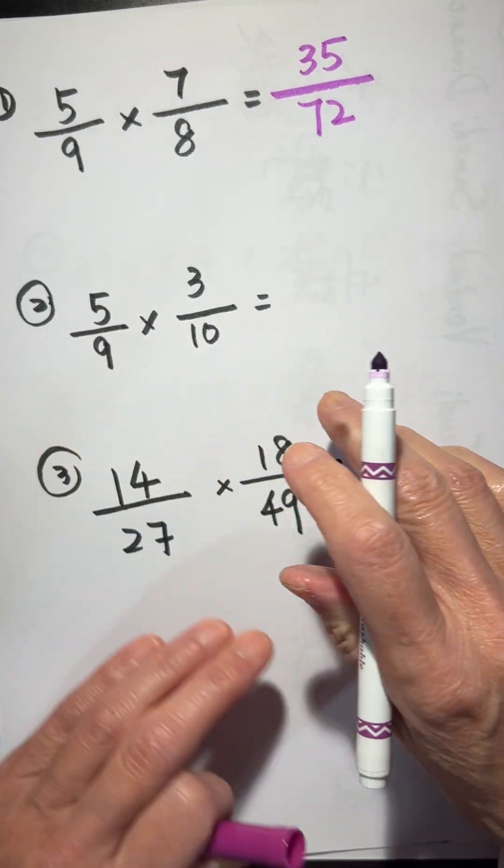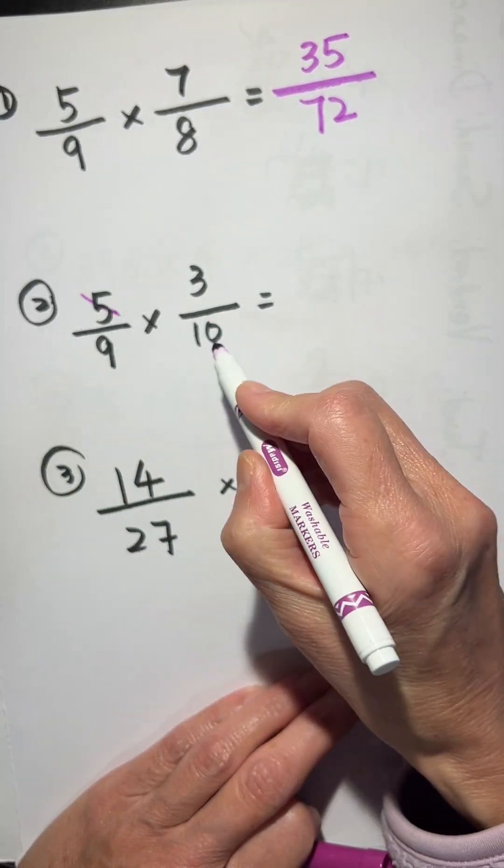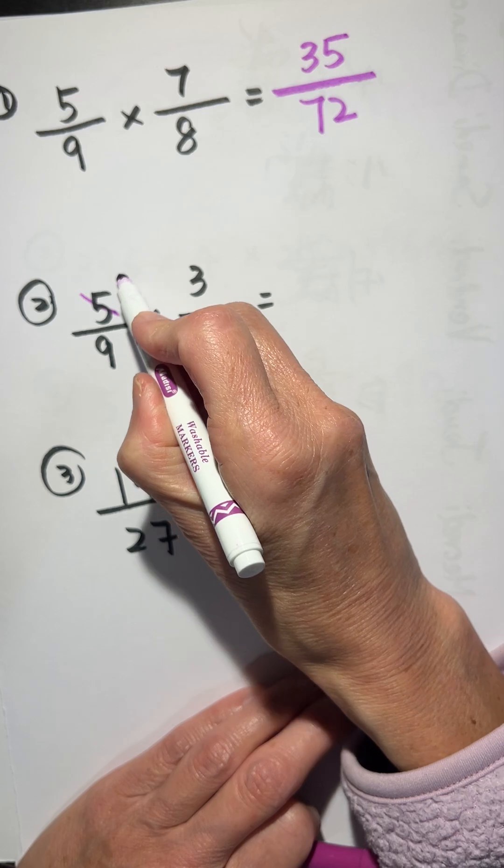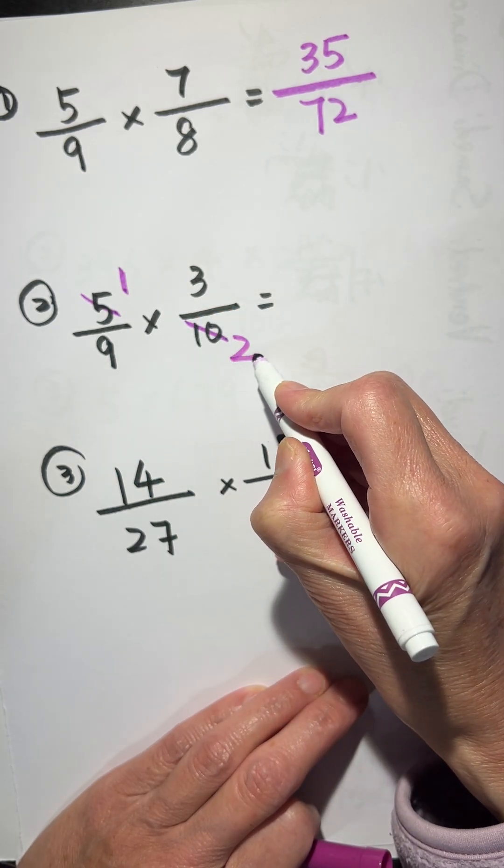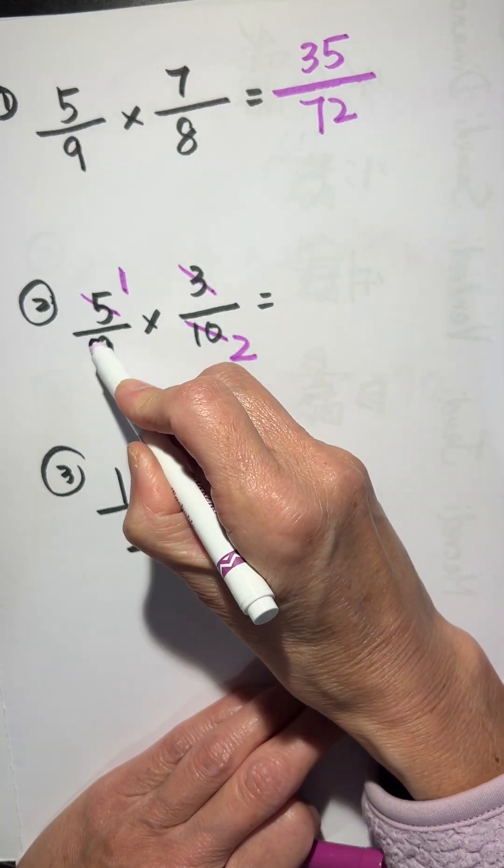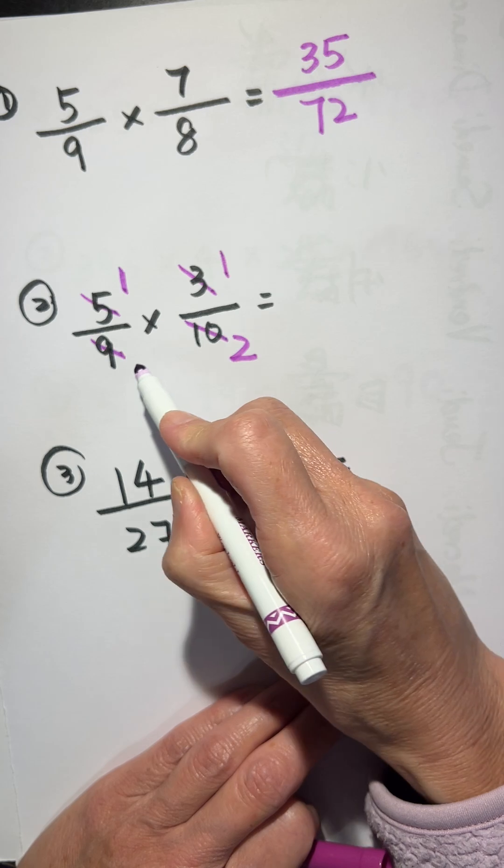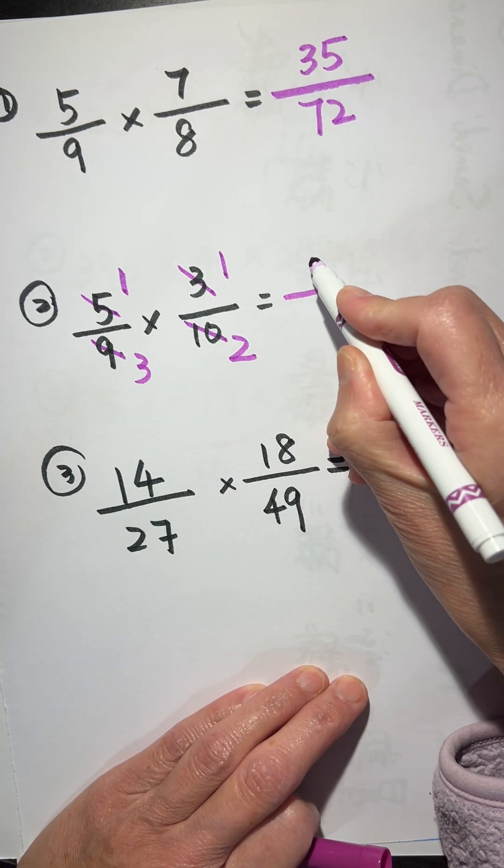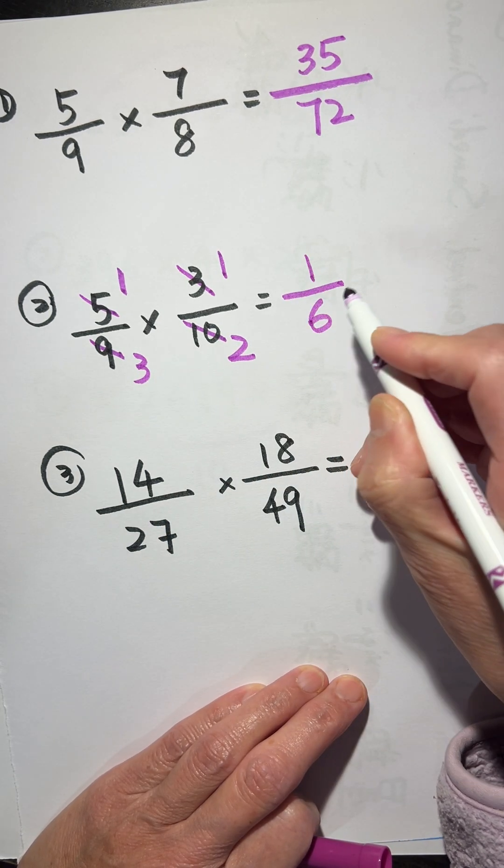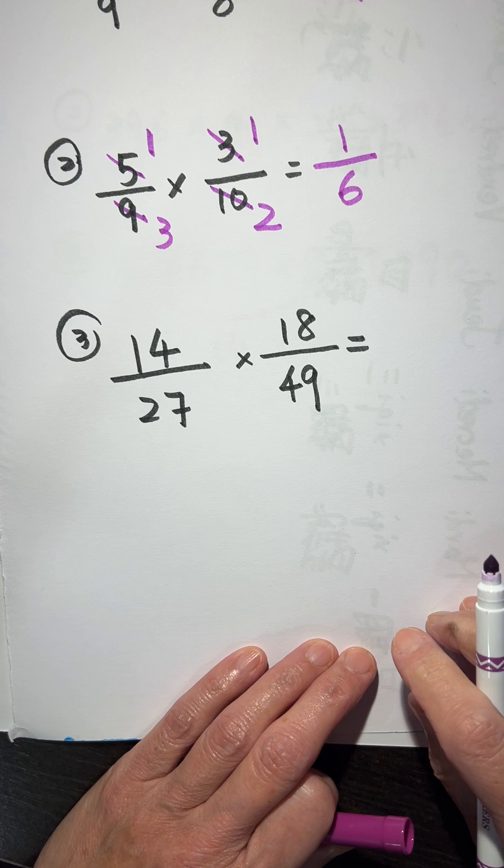And this one, we can simplify. 5 and 10, both divided by 5. 3 and 9, both divided by 3. So, the result is 1 over 6.